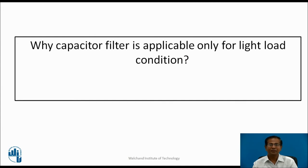Why is the capacitor filter applicable only for light-load conditions? The ripple factor of a capacitor filter equals 1 / (4√3 × F × C × R), which is inversely proportional to load resistance. For light load, current is small and resistance is large, so the ripple factor is minimum — meaning best performance. For heavy load, current is large, resistance is minimum, and the ripple factor increases, meaning more ripples and degraded performance. Therefore, the capacitor filter is applicable only for light-load conditions.